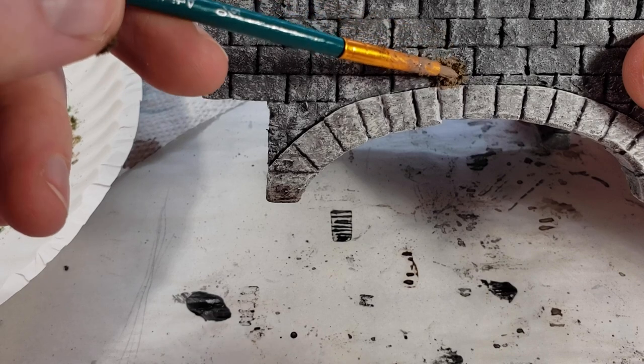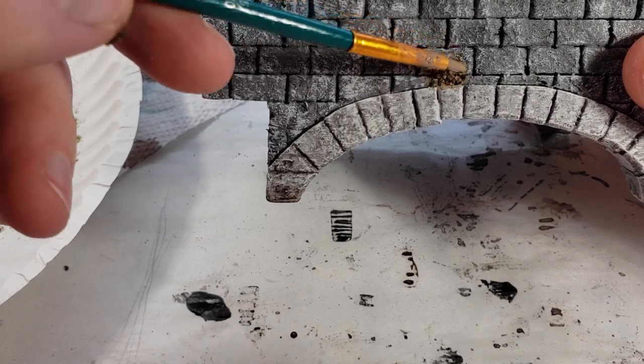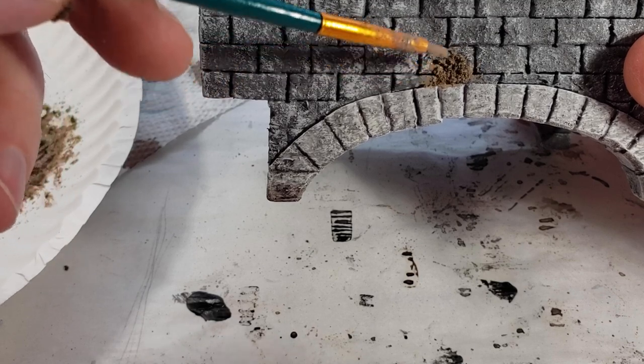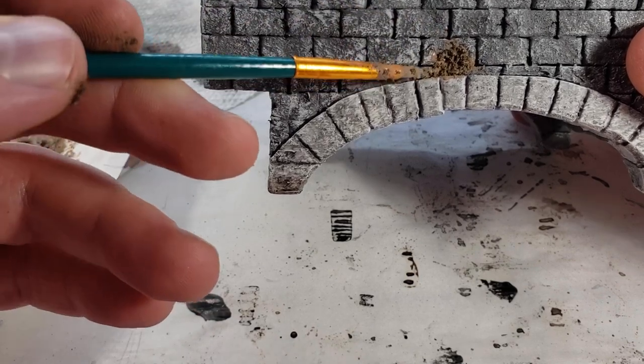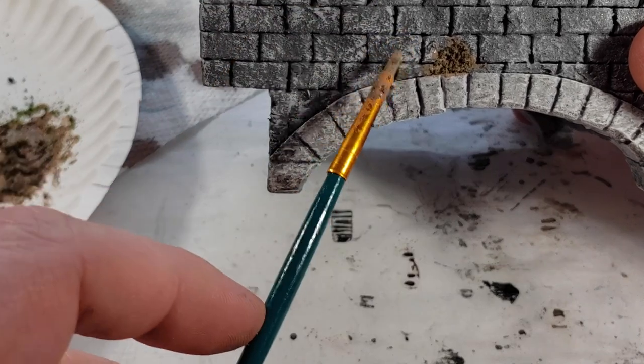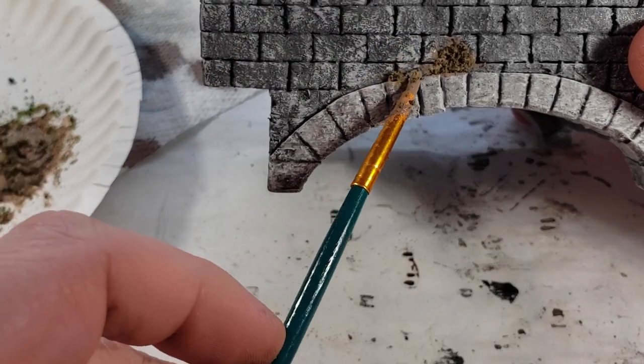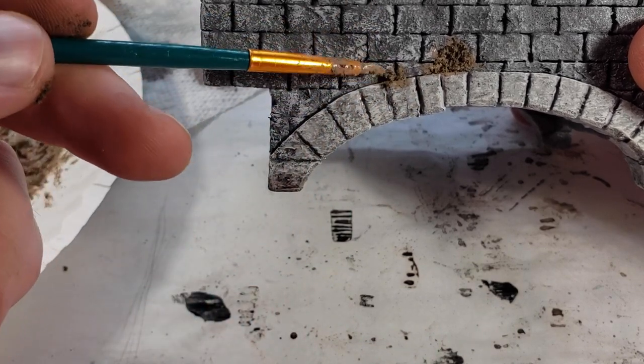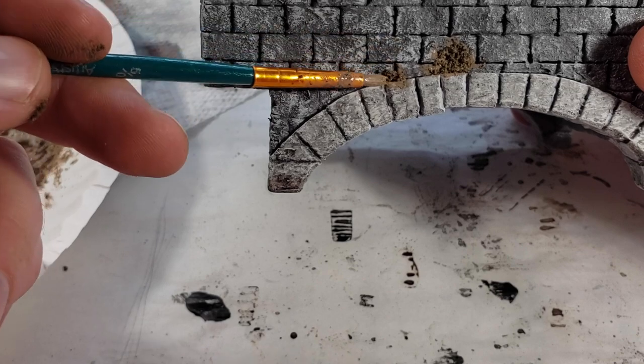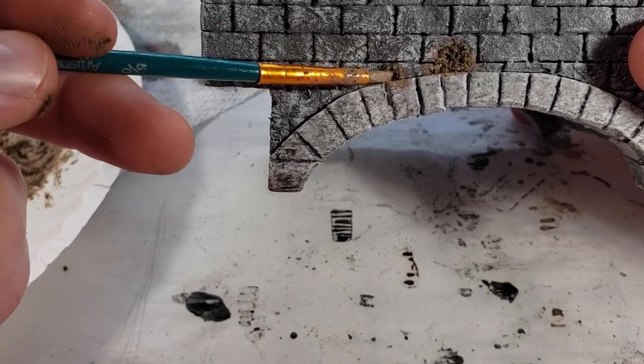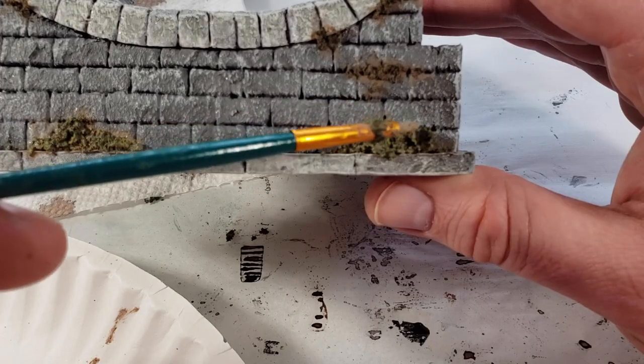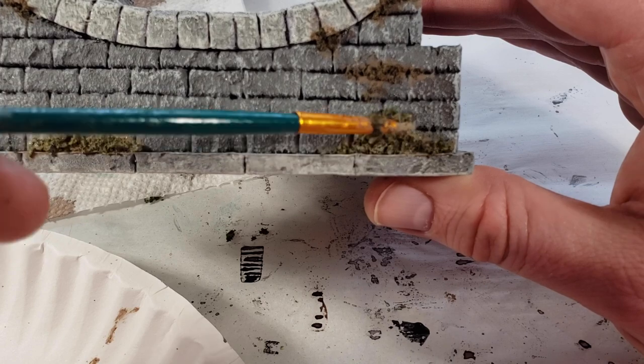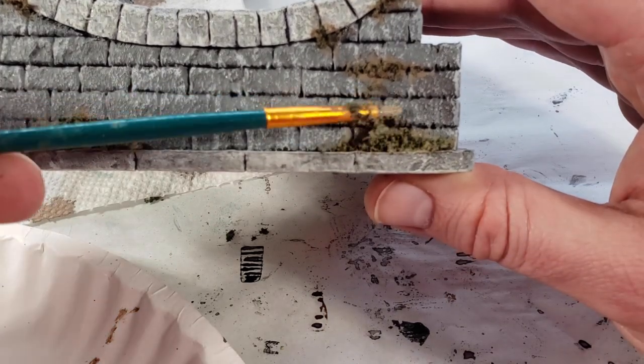I started applying it to the arches where dirt, mud, and muck might settle and moss might grow. I was really getting excited for these pieces of terrain while doing this step. After a while I got into my groove with this step and I might have overdid it but I still really love the way they came out.